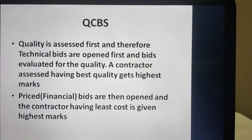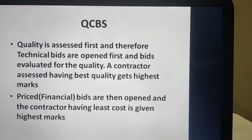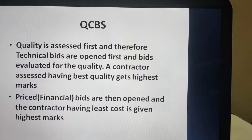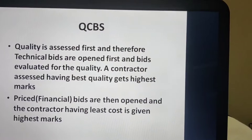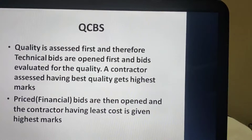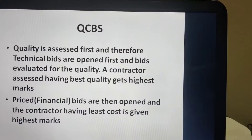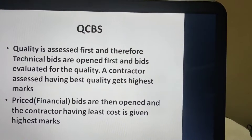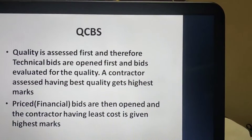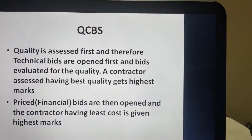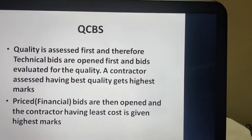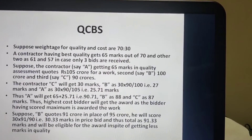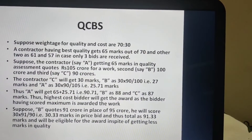Technical bids are opened first and then bids are evaluated for quality. A contractor assessed as having the best quality gets the highest marks. When financial bids are opened, the contractor having the least cost is given the highest mark. Both marks are added and whoever achieves the maximum marks is considered for award of the work. Suppose weightage for quality and cost is 70 to 30.